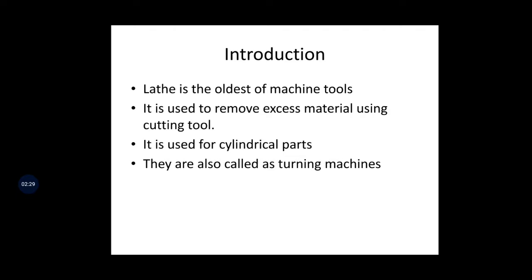Some material we have to melt and pour into a cavity, then allow it to solidify - later we get that solid object, which is called casting. There are several ways to make a product. One of the manufacturing methods is by machining process. Machining means the metal removal process. Lathe is one of the machine tools used to make a desired product as per the specification.